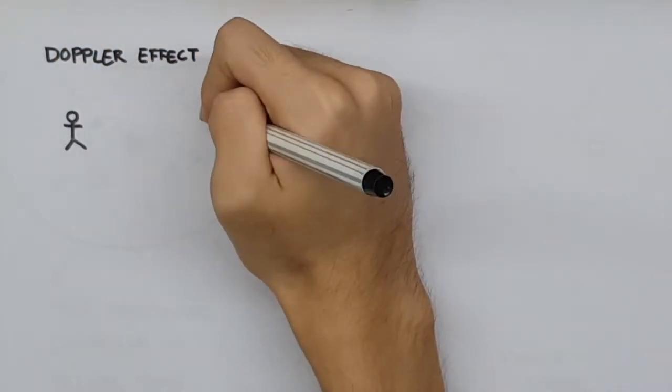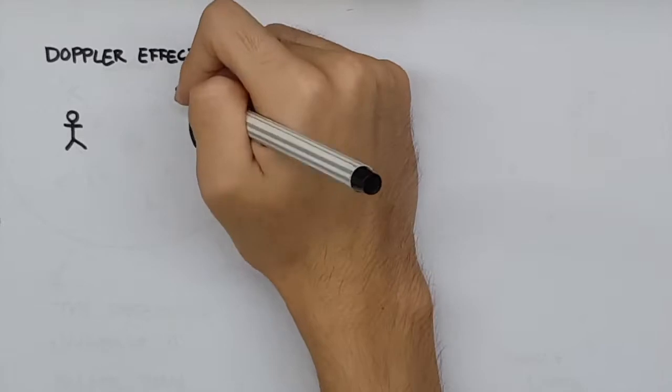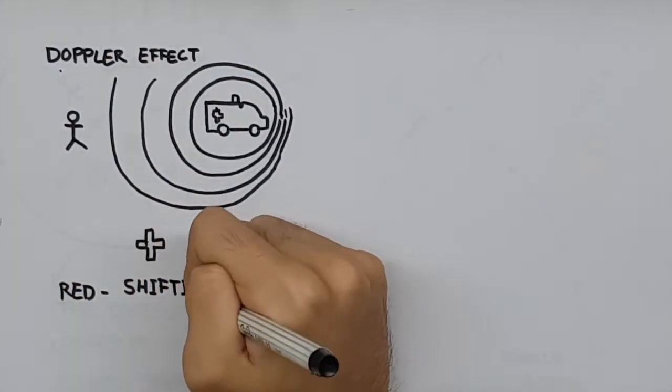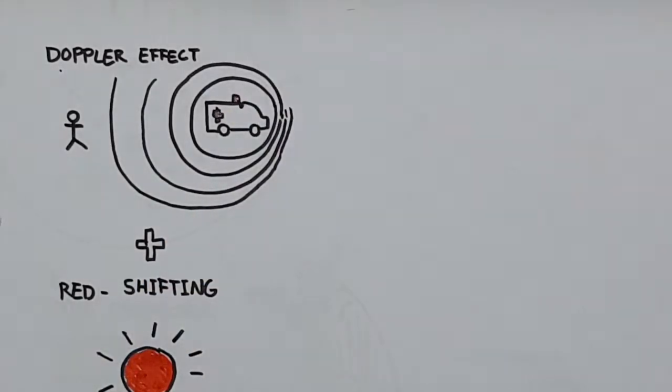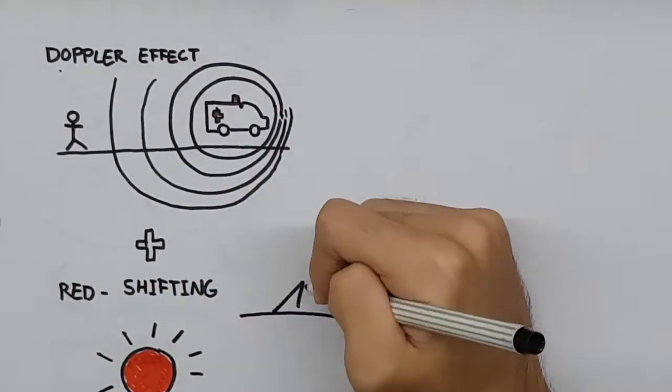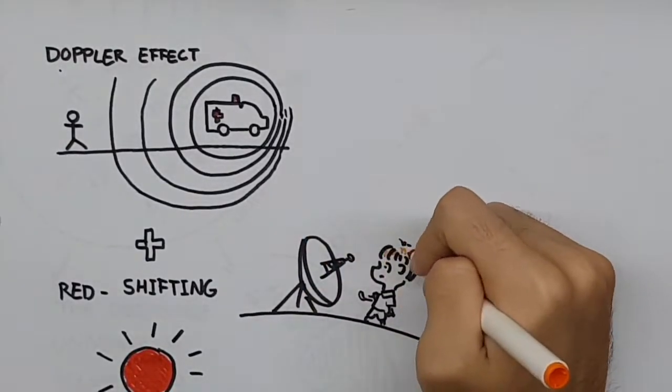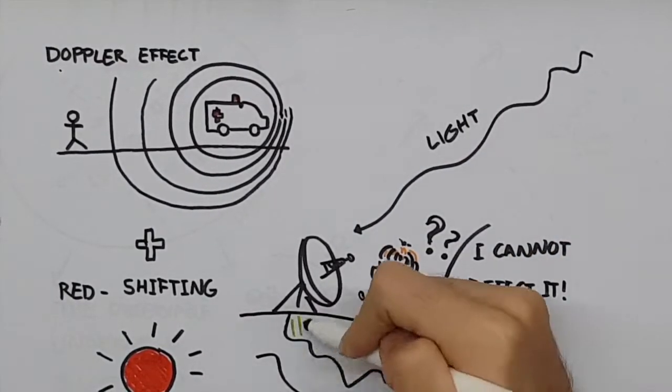Another explanation for why we can't see light from faraway galaxies has to do with the Doppler effect and redshifting. Even if the light from galaxies moving faster than the speed of light does eventually reach us, it may be impossible for us to detect it. This is because the light wave moving toward us is stretched to such a long wavelength as the galaxy itself moves away that not even our radio telescopes can detect them. This is called the Doppler effect.